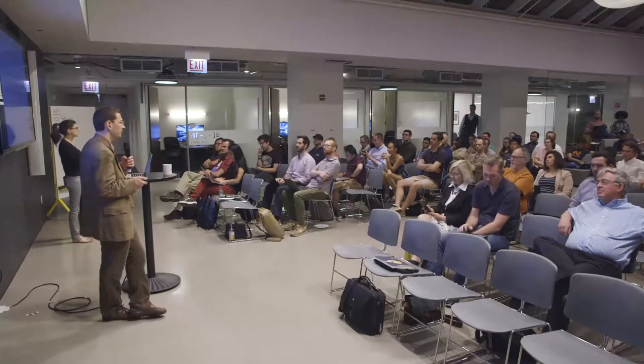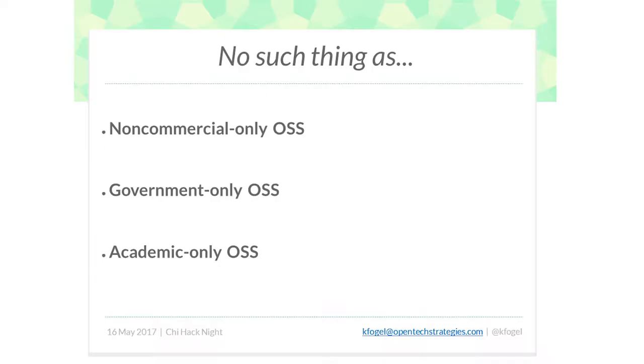There are a lot of companies that put out code and say you can use this for anything you want, but you can't charge money for the software or do anything commercial. I want to make very clear — and everybody who deals with open source regularly agrees, every lawyer, every company, Microsoft, the Wikimedia Foundation, the Open Source Initiative — there is no such thing as non-commercial-use-only open source software. There's no such thing as government-only or academic-only. Anybody can use any piece of open source software for any purpose.